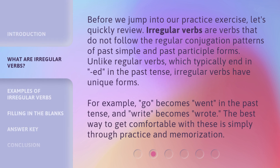Before we jump into our practice exercise, let's quickly review. Irregular verbs are verbs that do not follow the regular conjugation patterns of past simple and past participle forms. Unlike regular verbs, which typically end in "-ed" in the past tense, irregular verbs have unique forms. For example, "go" becomes "went" in the past tense, and "write" becomes "wrote." The best way to get comfortable with these is simply through practice and memorization.